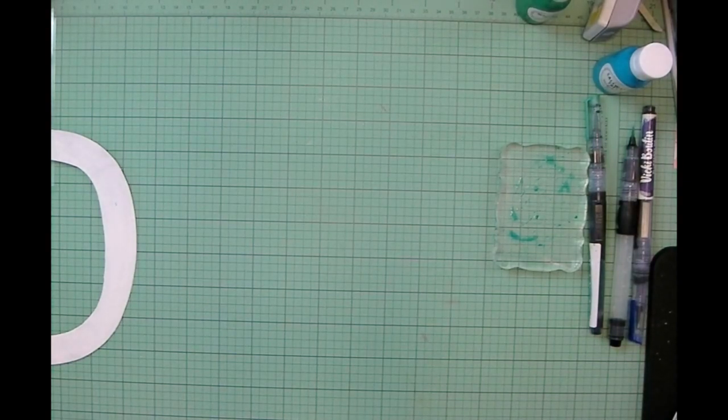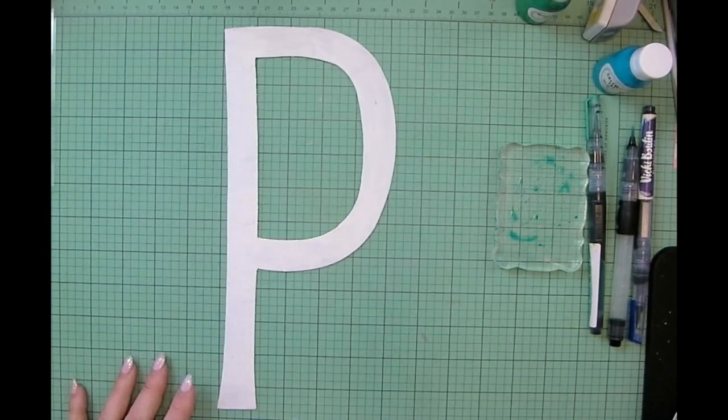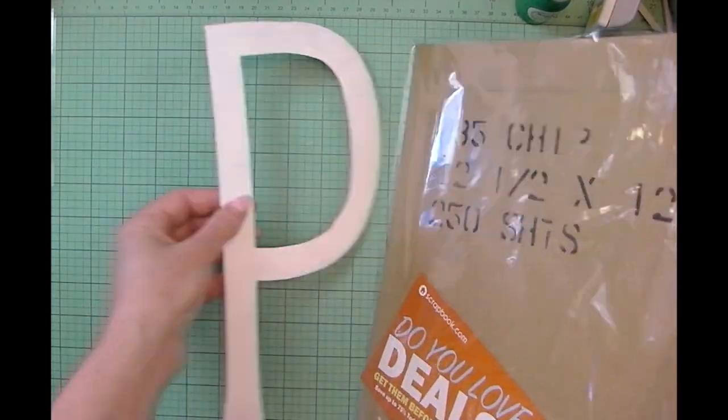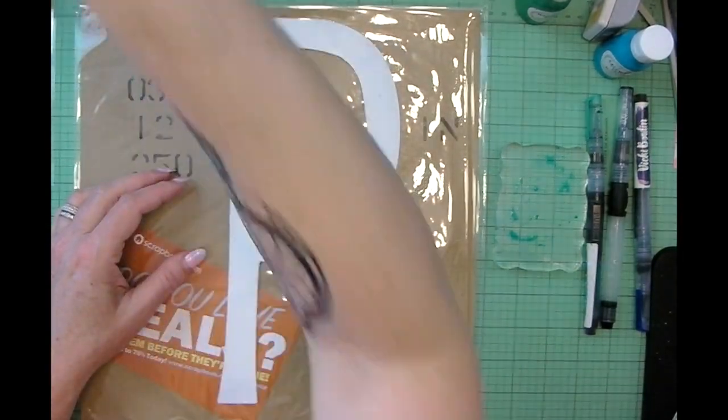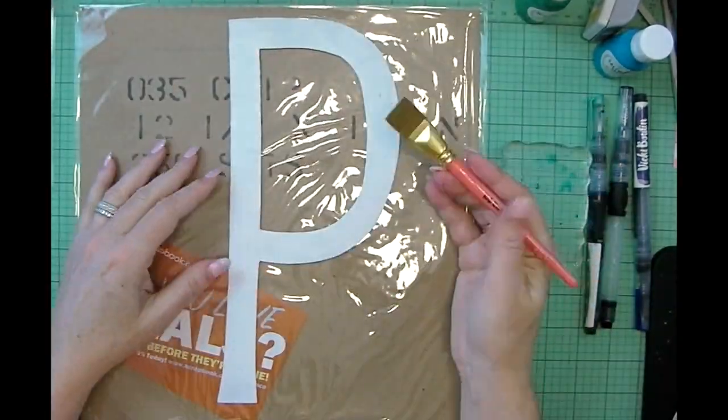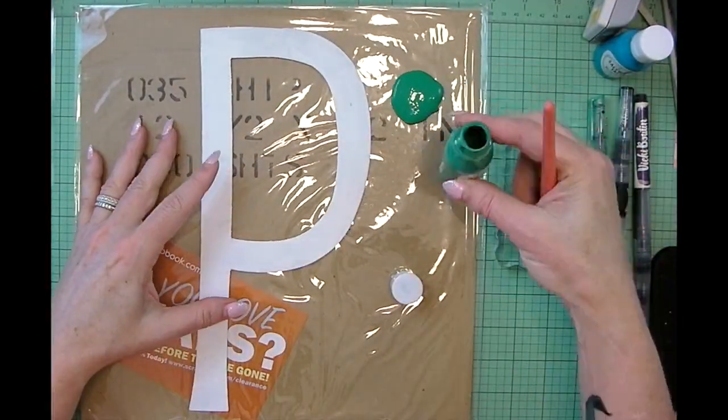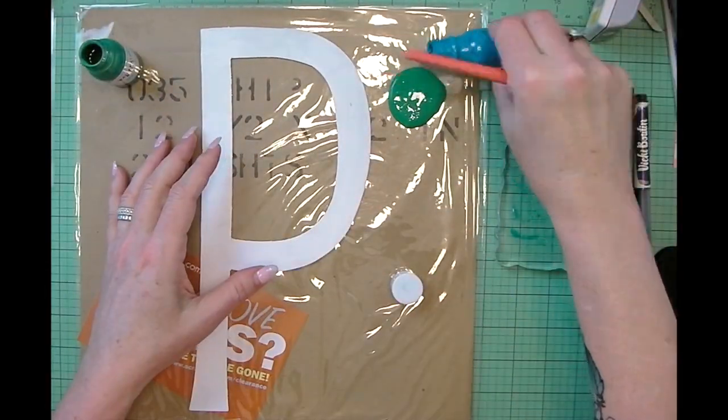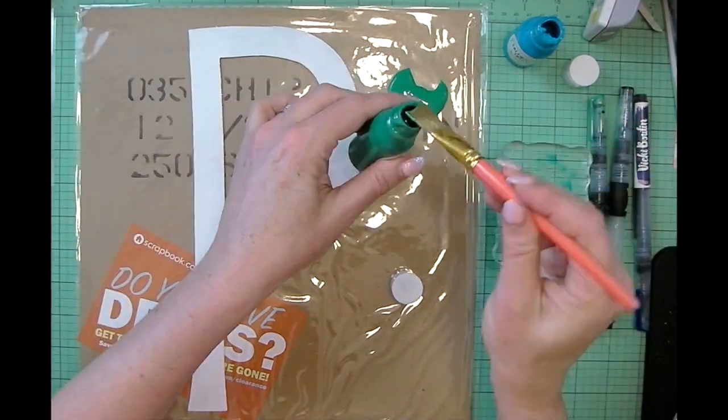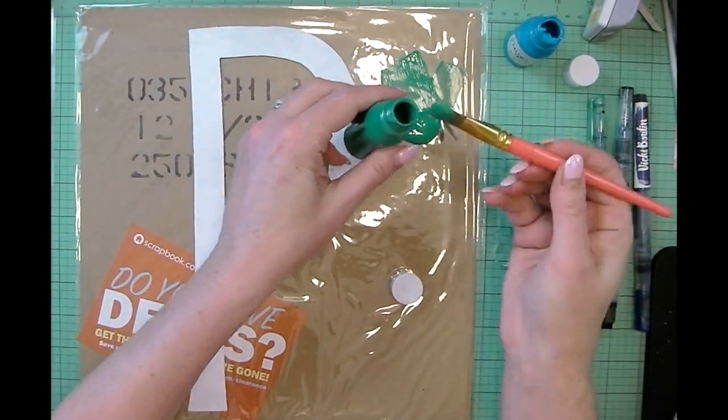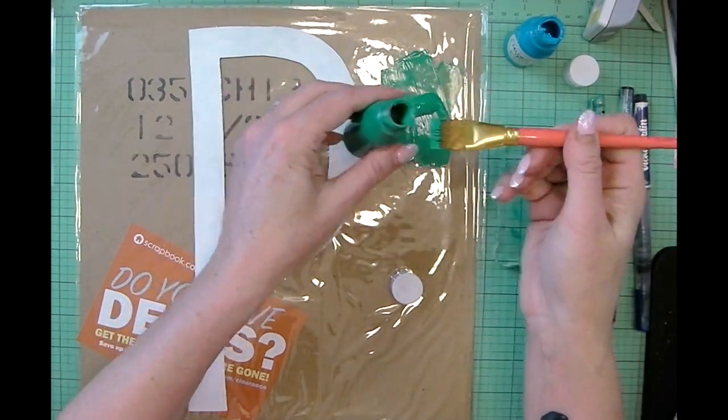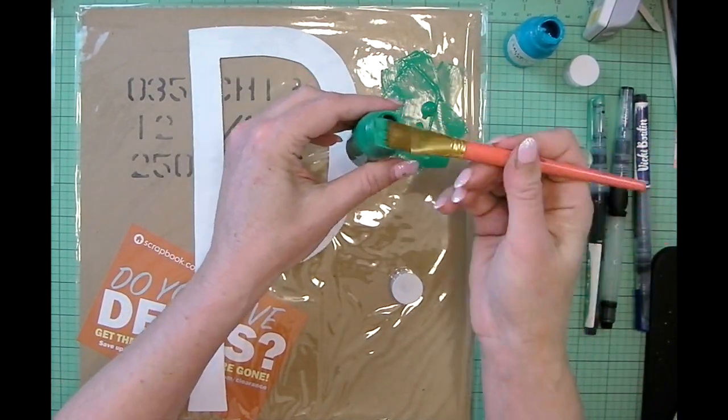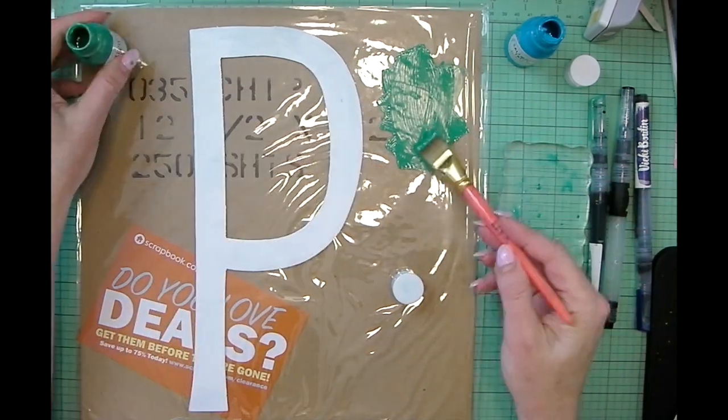I'll set this aside to dry, and now we can move on to the next step, which is coloring our chipboard letter. I'm going to mix some paints and use a Vicki Booten paint brush. I poured out too much of that watermelon, so I'm going to put most of it back in the jar there.